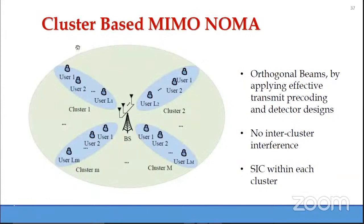NOMA can be combined with MIMO. With MIMO beamforming gain, we have different orthogonal beams, and NOMA can be applied in each beam. There is no inter-cluster interference, and within each beam (cluster) we apply successive interference cancellation.